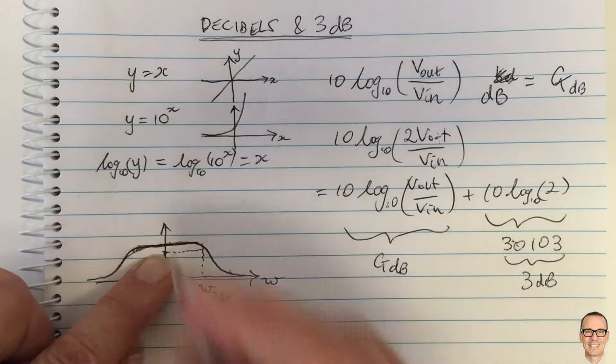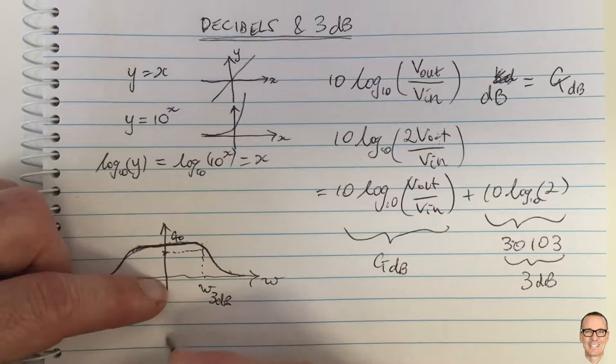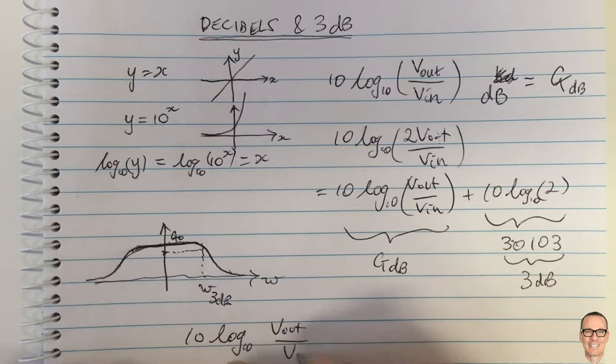...well this is 3 dB down from the maximum so if this was our gain g0 at the top then this is g0 minus 3 dB okay and g0 minus 3 dB is if we look at what we've got here we've got 10 if we had log I'll just do it in reverse so we've got V OUT divided by V in if we multiply that by a half...